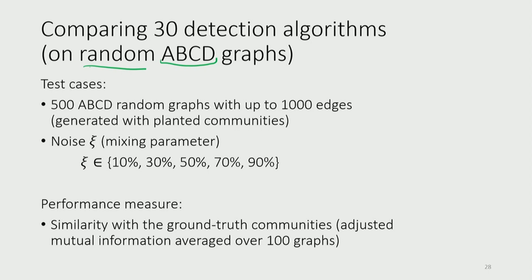We let the algorithm find the partition and then measure the similarity between the partition it finds and the ground truth partition. If an algorithm can find the ground truth partition where no label information is provided, it means the algorithm is doing a good job. We also have a measure of noise — the ABCD model has a parameter called the mixing parameter, which controls the amount of noise. For example, 90% of edges can be between nodes of the same label and only 10% between different labels, so the topology doesn't immediately reveal the clusters.